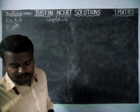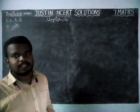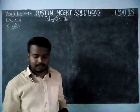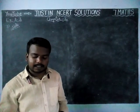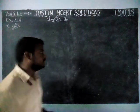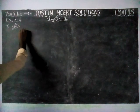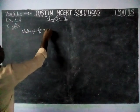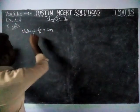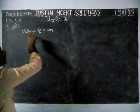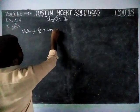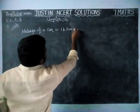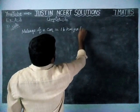So per litre it is travelling 16 km — that is the mileage of a car. Otherwise we can say the car travelled distance in 1 litre of petrol; we can use that mileage. Normally mileage of a car is calculated per litre, how much kilometre it is travelling. So mileage of a car is equal to 16 km per litre.